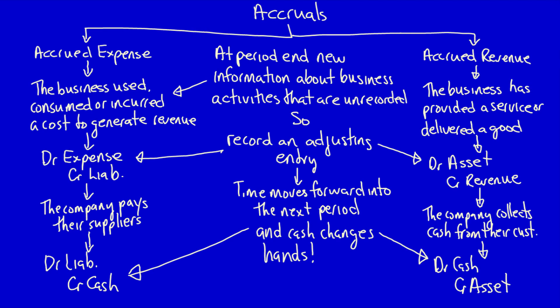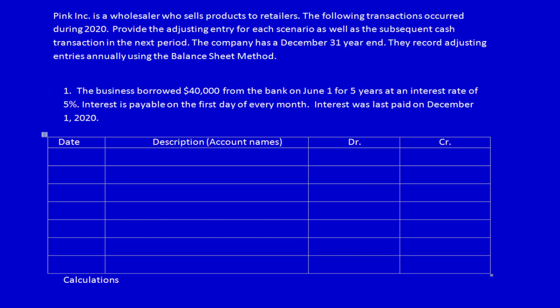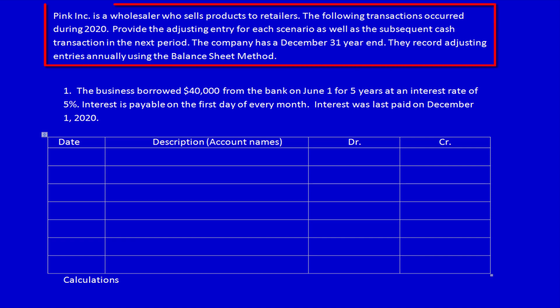In my last video, I developed a flowchart for accrual adjusting entries. What I want to do now is do at least five examples of what applying this flowchart looks like. Similar to the prepayments, I'm going to use the exact same company, Pink Ink, a wholesaler who sells products to retailers.